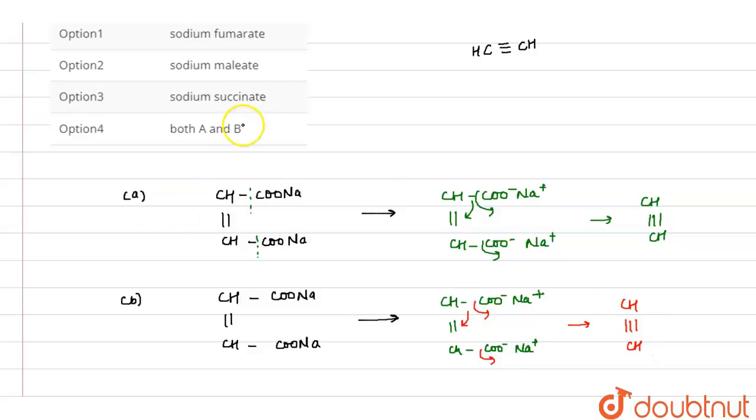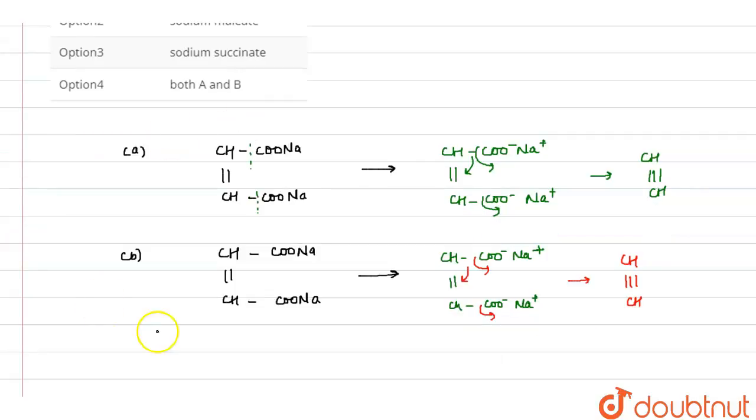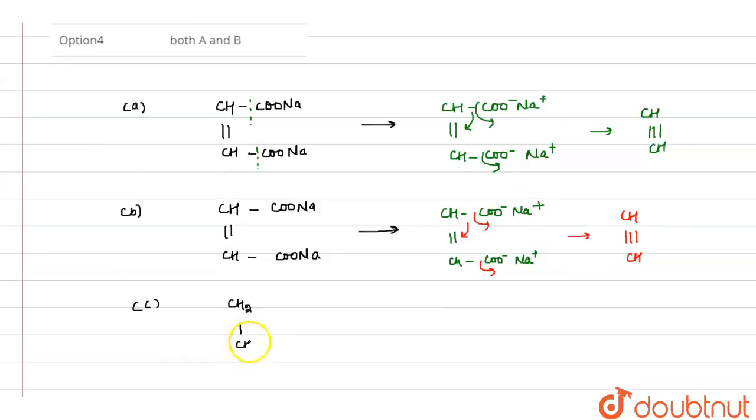In case of sodium succinate, its structure is CH₂ COO⁻ Na⁺ and CH₂ COO⁻ Na⁺. So when electricity is passed, these bonds are broken down.